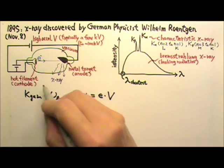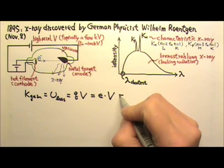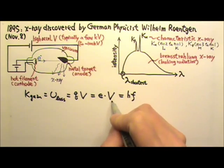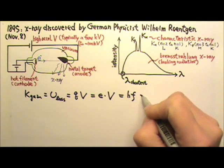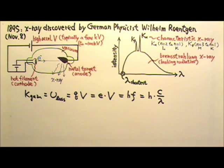At most, it can lose all its kinetic energy to the X-ray photon. Therefore, at most, the X-ray photon energy hf can be this much. And f is c over lambda. And this gives us the highest energy, highest frequency, and the shortest wavelength X-ray photon an X-ray tube can produce. We will look at the sample problem in the next lesson.